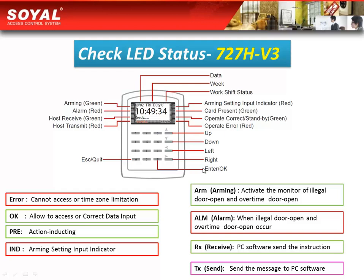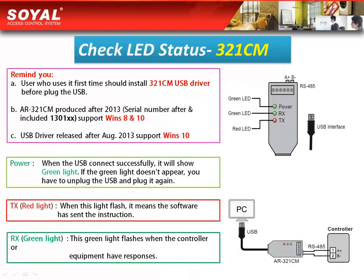Compared to the 721H, the 727H V3 has a monitor, so you can see more light indicators on the monitor. In this section, we will learn how to check the LED status of converter 321CM.